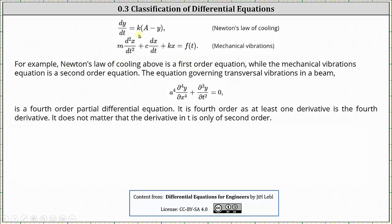For example, Newton's law of cooling is of first order because it only involves the first derivative, while the mechanical vibrations equation is second order because the highest derivative is the second derivative. The equation governing transversal vibration in a beam shown below is a fourth order partial differential equation — it is fourth order as at least one derivative is the fourth partial derivative. It does not matter that the derivative with respect to t is only of second order; the equation is still classified as fourth order.